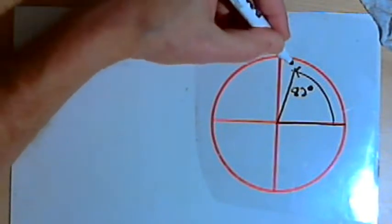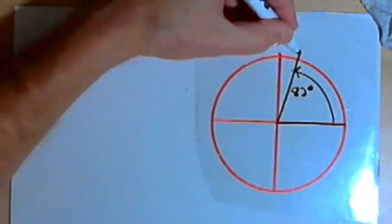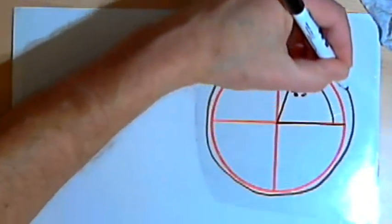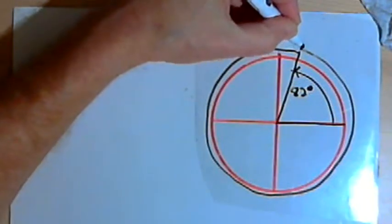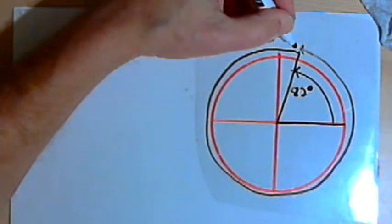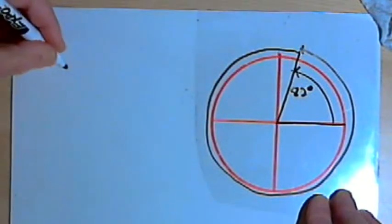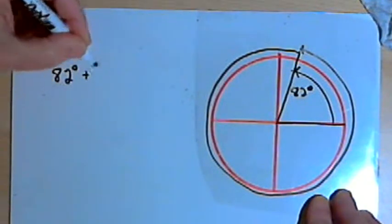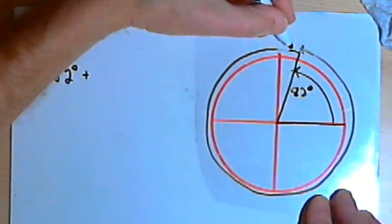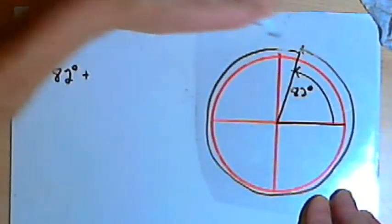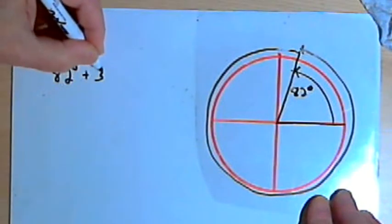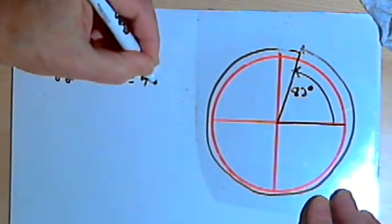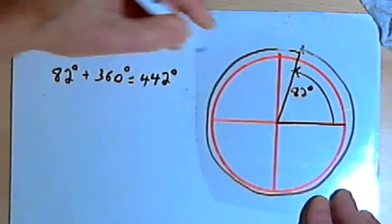Now let's say that from that point where I ended up, I go around one complete circumference around that circle, and I end up in exactly the same place where I did before. So what I've done is, I've taken the 82 degrees and I've added 360 degrees more. That's that one trip around the circle. And I end up with a new angle that has a measure of 442 degrees.